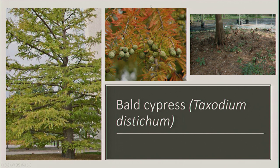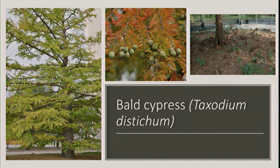Next is bald cypress — Taxodium distichum. It's a water-loving species, so if you have a low-lying area in your yard, a bald cypress would be perfect. Giveaways are the fruit — it looks like a green ball — and the feather-like leaves. One thing other trees in our area don't have are knees, or pneumatophores. It's still being debated what exactly these structures are for — the obvious answer is some kind of gas exchange for trees in water or compacted soils — but researchers believe they may serve other purposes as well.